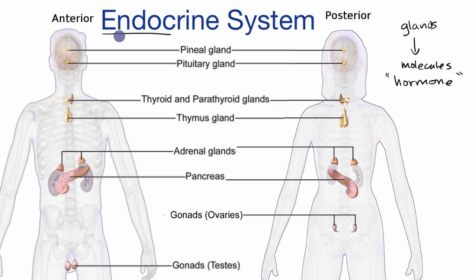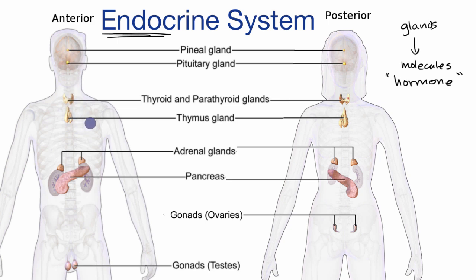'Endo' refers to the fact that it's acting within the body. 'Crine' originally comes from Greek for 'to sift' or to differentiate something. It's a system of organs, or glands, that secrete molecules — these hormones — into the bloodstream to regulate the body. I'm not going to go in depth on all of these endocrine glands, but just to give you an appreciation of what they do and what these hormones are all about.